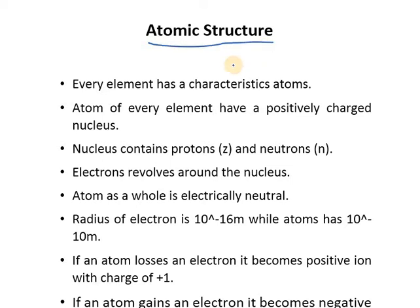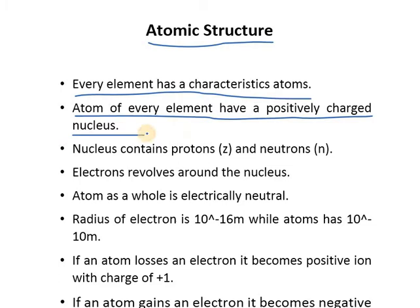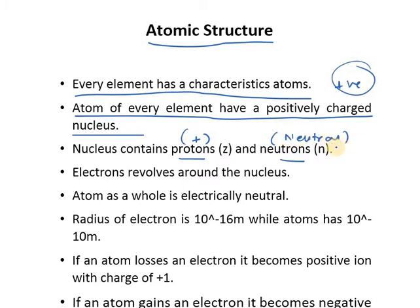The basic terminology used in atomic structure: every element has certain characteristics. Every element has a positively charged nucleus. Whatever the element may be, it will have a positively charged nucleus. The nucleus basically contains protons and neutrons. Protons are positively charged and neutrons are neutral in nature — they don't carry any charge.